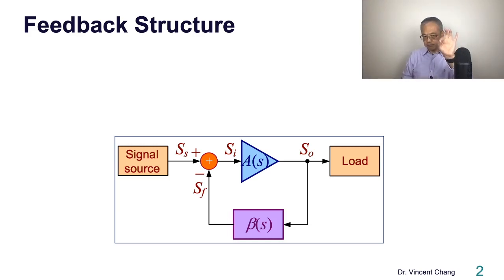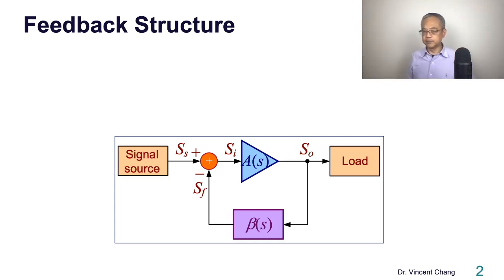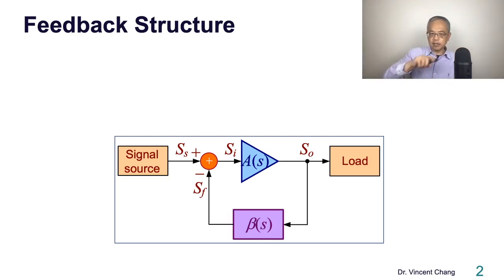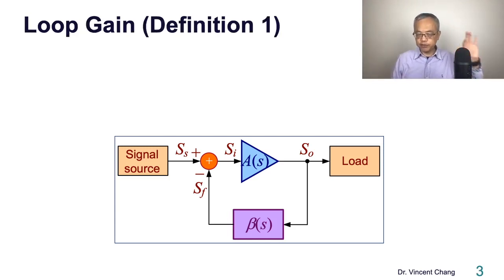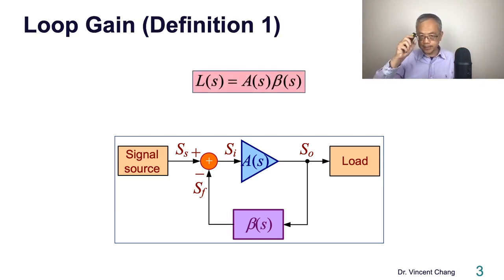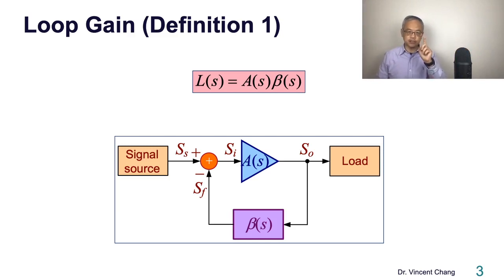If we talk about the operation of the signal: SS minus SF equals SI, and SI times A — as a function of S — becomes SO, the output signal. XO goes back, multiplied by beta, creating SF. So it's a closed-loop configuration. The first definition of loop gain is the product of the open loop transfer function A times the feedback transfer function beta. This is the first definition for loop gain.